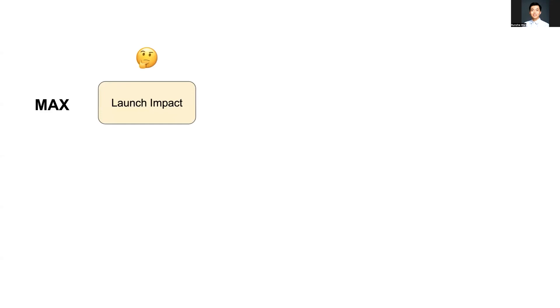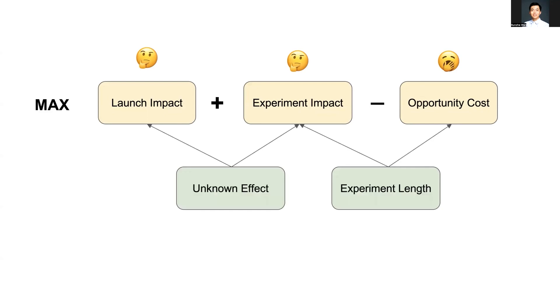Including the effect of the future launch, the impact of the experiment, and the opportunity cost. These components consider both the information gained from experiments and the cost of running the experiments, which form a main trade-off.